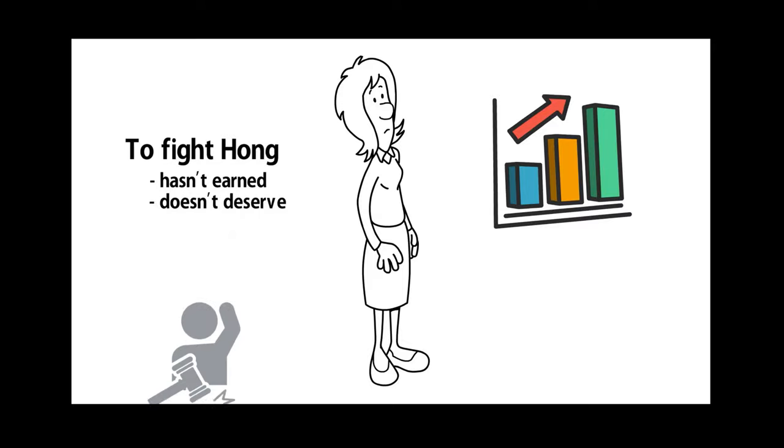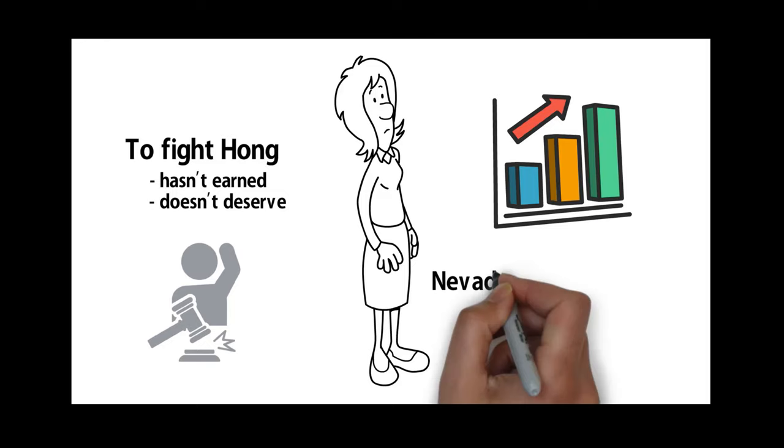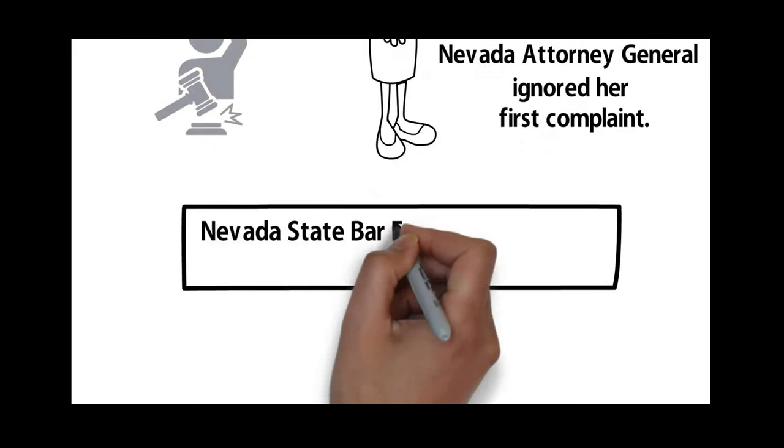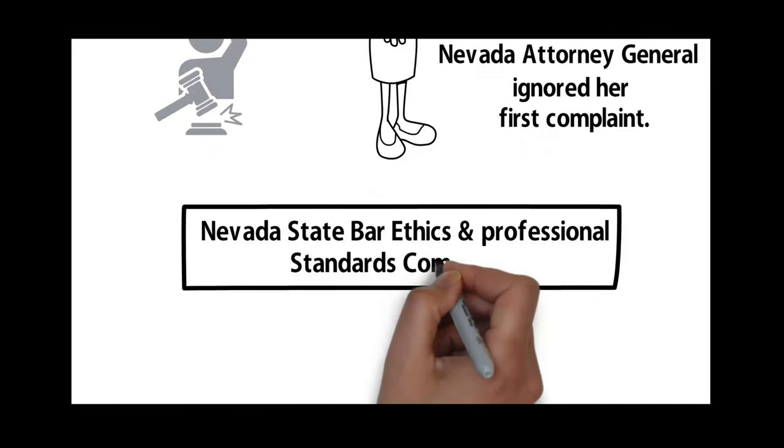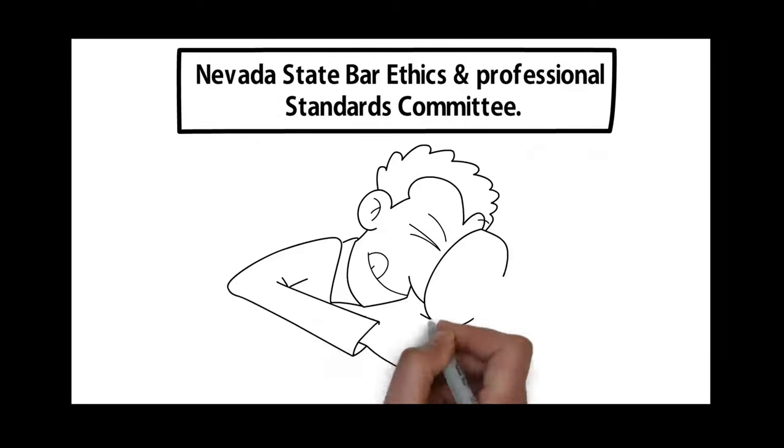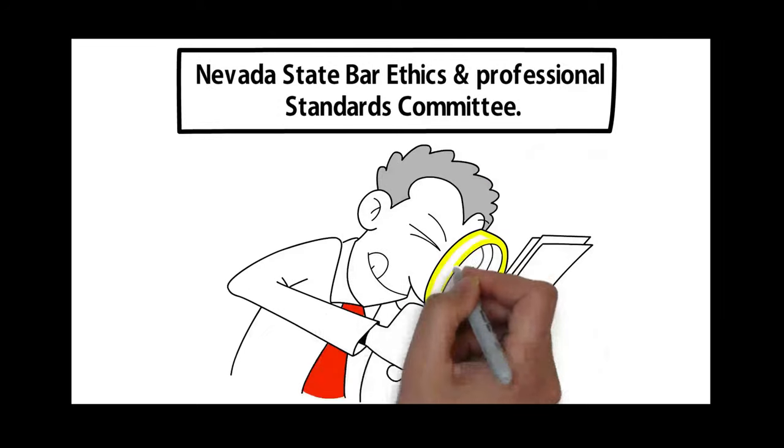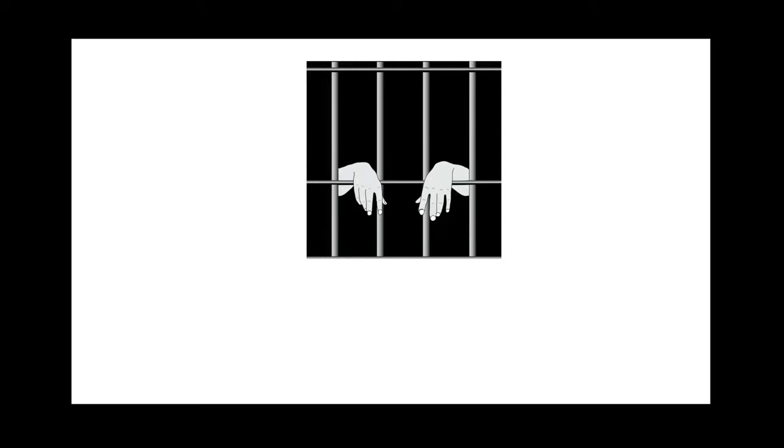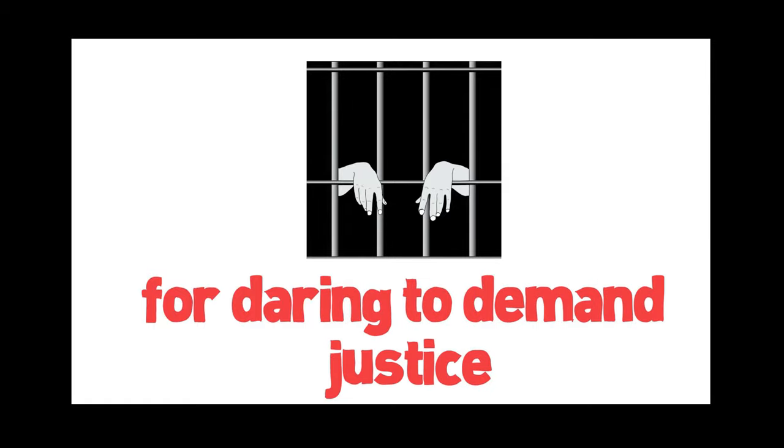Nona will keep appealing Judge Johnson's decisions. Nona will complain again to the Nevada Attorney General who ignored her first complaint. Nona will complain to the Nevada State Bar Ethics and Professional Standards Committee. Nona will ask for an investigation to show cause why Joseph Hong should not be disbarred. Nona will persist even if she is thrown behind bars herself for daring to demand justice.